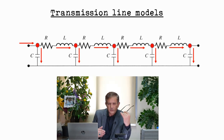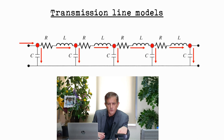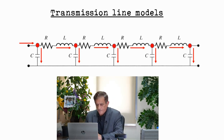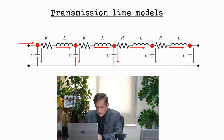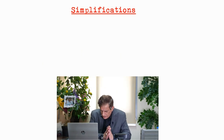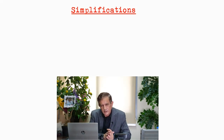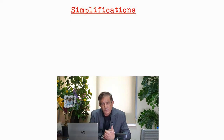This is complicated, and we want to find a way to simplify it. We are searching for simplification. Transmission lines are divided lengthwise into three categories. The first category is up to 80 kilometers or 50 miles — we call this the short line.